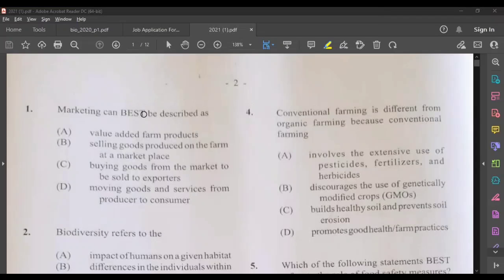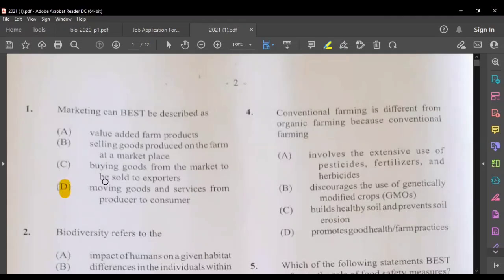The first question: marketing can best be described as value-added farm products, selling goods produced on the farm at the marketplace, buying goods from the market to be sold to exporters, or moving goods and services from producer to consumer. The best answer for this question would be D, moving goods and services from the producer to consumer.